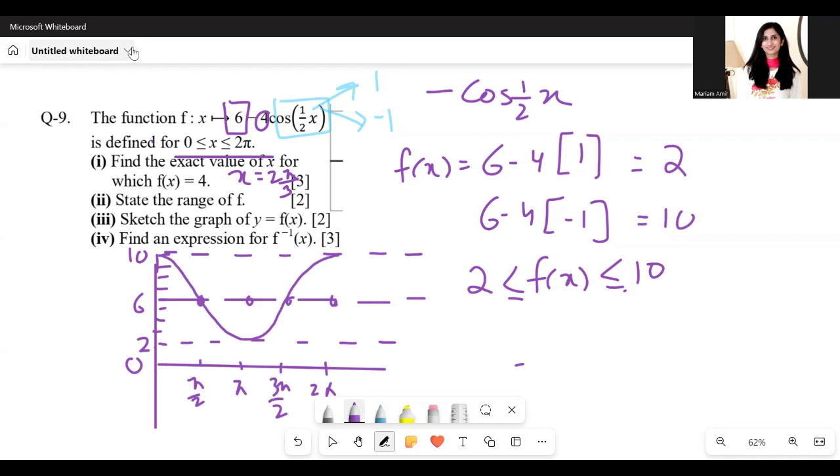But now I'm going to draw cos half x. Cos half x actually completes half a cycle between 0 to 2 pi. So it is like this. It only completes half a cycle. Only this part is completed from between 0 to 2 pi. But it's also inverted because it's a negative cos half x.